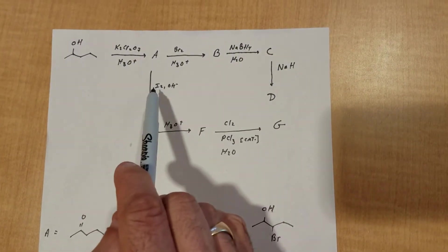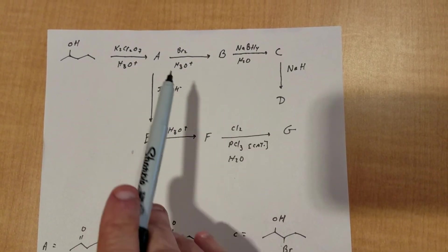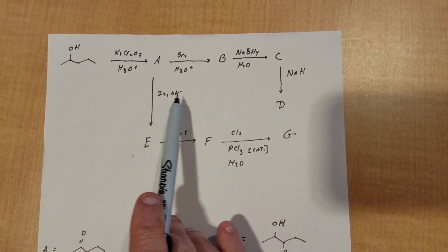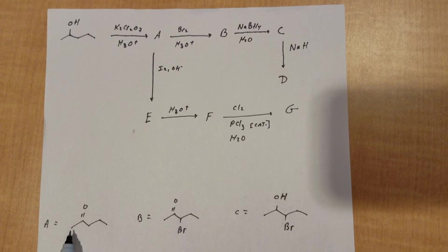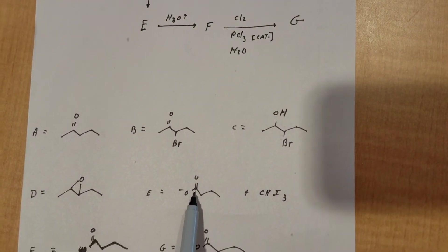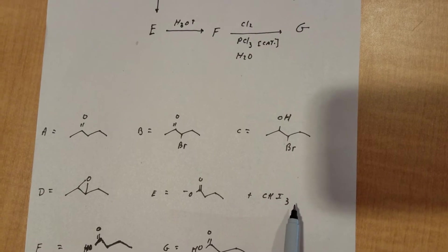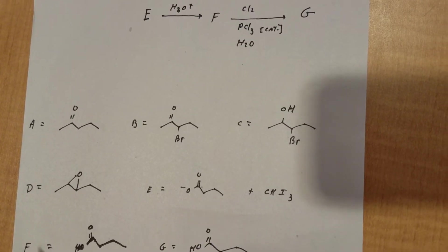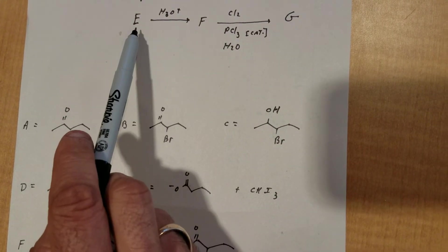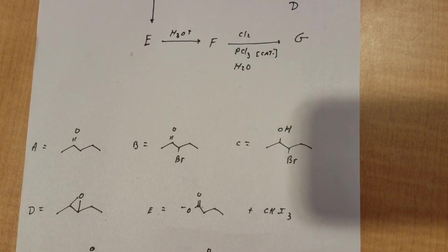Go back to A, iodine and base. What that's going to do is you're treating a methyl ketone with iodine and base, and that's the haloform reaction. So you're going to remove off the methyl and oxidize it. So you knock off the carbon, and it becomes CHI3, which is the yellow iodoform precipitate, and you get the carboxylate ion. And then finally, you would acidify it, and that would give me F, the carboxylic acid.